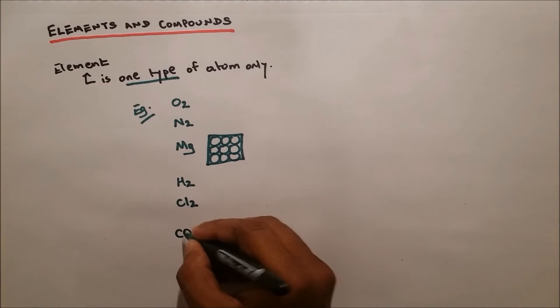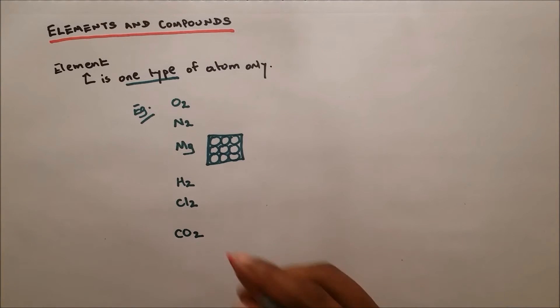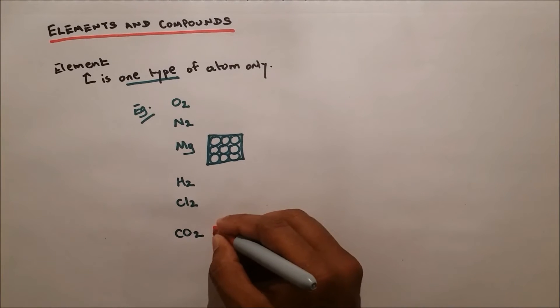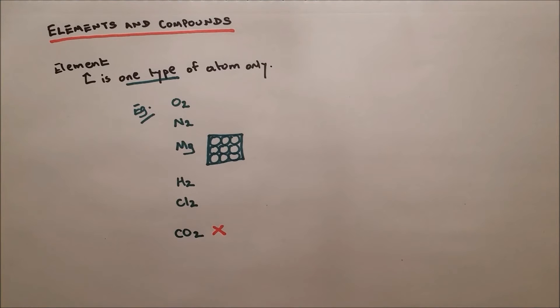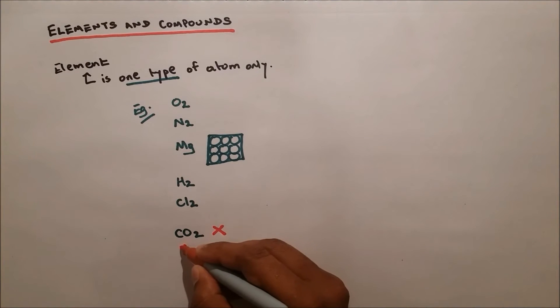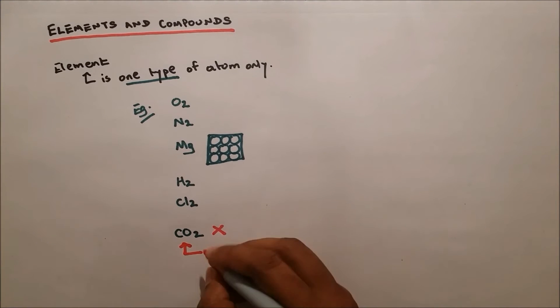Chlorine. So what about CO2? No, CO2 is not an element. Why? Because you can see that it has two different atoms and they're chemically combined. So what do we call this? We call this a compound.